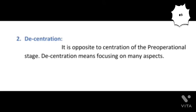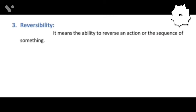The second characteristic is decentration, which is the opposite of centration from the pre-operational stage. Decentration means focusing on many aspects of something or a situation. For instance, if you show children two lines of circles and ask which has more, children in the pre-operational stage would say the second line, focusing only on the length. But in this stage, children will also focus on the number of circles, their size, and the spacing between them, and will give the correct answer.